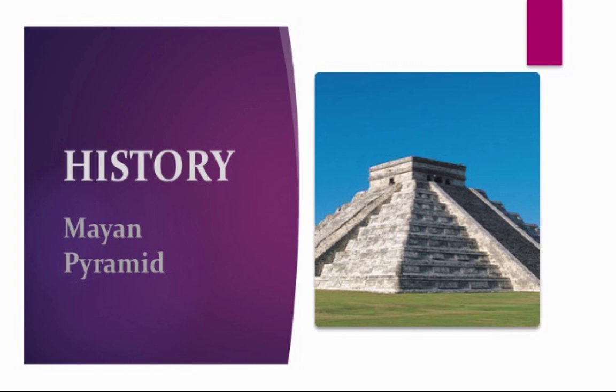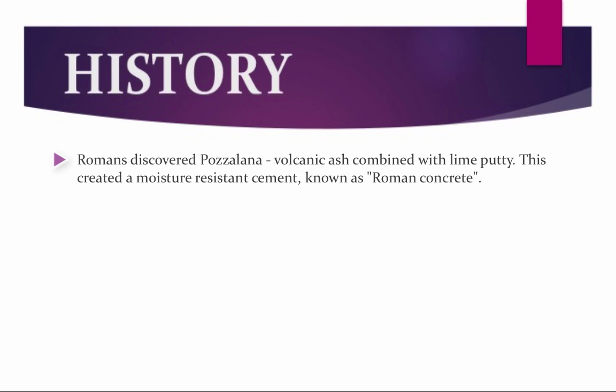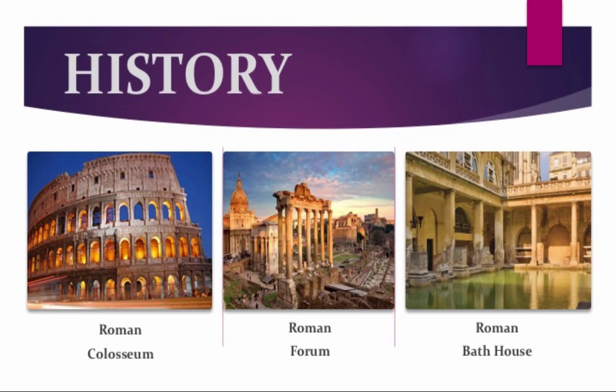We attribute this to the fact that the Mayans are not in a desert — they don't have the high winds and sand blowing against the plaster as an abrasive. The Romans discovered pozzolana, a volcanic ash combined with lime putty. This created a moisture-resistant cement known as Roman concrete or opus cementicium. Examples of this product's use were on the Colosseum, the Forum, and the Roman bathhouses.